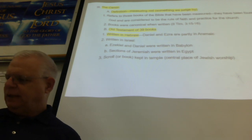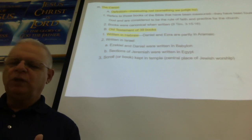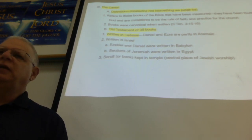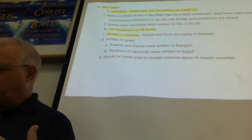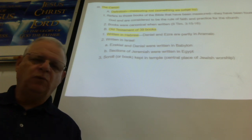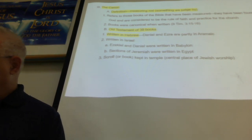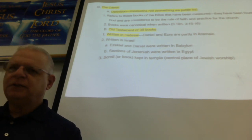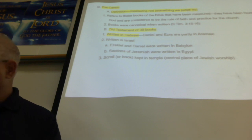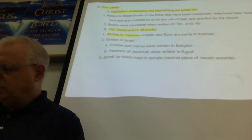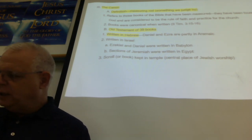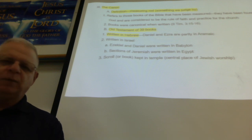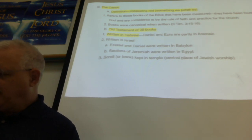The canon is simply a word talking about a definition, a measuring rod — something we judge by. Over time, over those first few hundred years, people were disagreeing and adding, so finally they sat down and said: what can we really agree on out of all that's been written is God's Word? The books were a measuring rod when they were written — given by God, and God has protected these books to be the books that make up our Bible. The Old Testament: 39 books, mostly written in Hebrew. Daniel and Ezra are partly Aramaic, mostly written in the country of Israel.